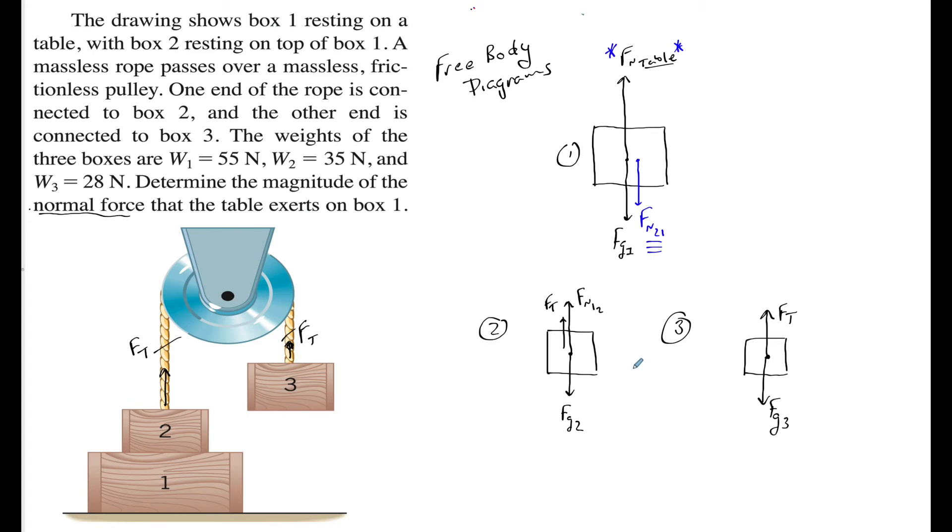Now that I have my free body diagram set up, I can go back and look at my givens. They give us the weights, the FGs for each one of these. So I can write 55 Newtons for box 1, 35 Newtons for box 2's weight, and 28 Newtons for box 3's weight. The other implied information is because this thing is at rest, acceleration is equal to 0 m/s² and F net on the system is going to be equal to 0 Newtons as well.